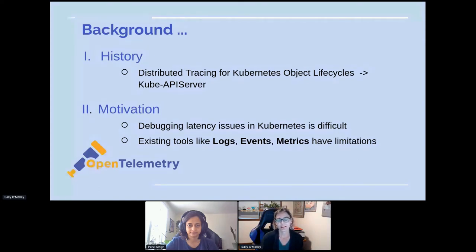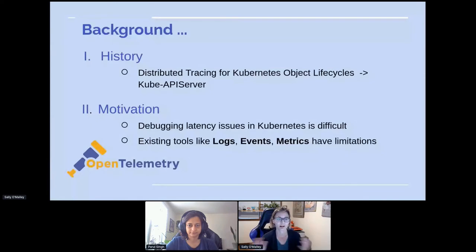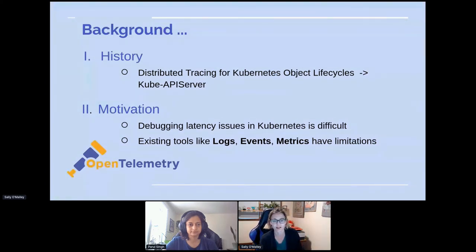Debugging latency issues in Kubernetes is just really difficult. There are so many services and transactions happening, and it's hard to figure out where a latency issue is occurring. Tools like logs, events, and metrics are great but have limitations. With logs you have to know what you're looking for, searching each component individually — you don't get that overall picture. Events aren't a standard format, so many are custom messages and hard to make sense of. Metrics are useful for showing that a process is slow, but not why it was slow.